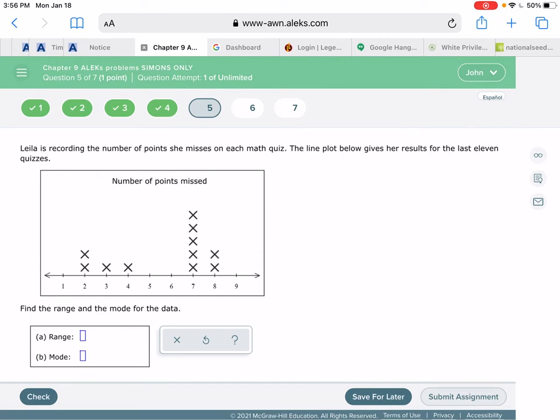So the problem says that Layla is recording the number of points she misses on each math quiz. The line plot below gives her results for the last 11 quizzes. So if we look at this line plot we know that there's 11 different data points on here.